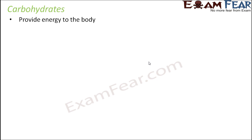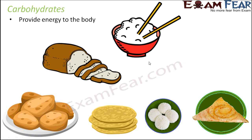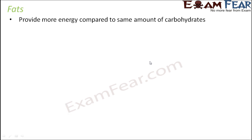Let us first talk about carbohydrates. Carbohydrates primarily provide energy to the body. Energy is needed to perform any kind of activity, whether physical work or mental work — we need energy everywhere, and this energy is provided by carbohydrates. Some food items rich in carbohydrates are bread, rice, potato, tortillas or chapatis, idli, and dosa — all made up of cereals like rice or wheat.